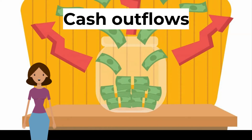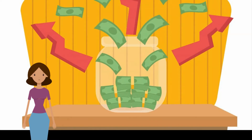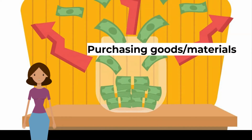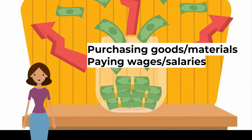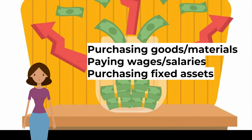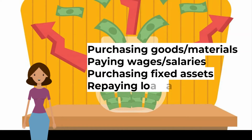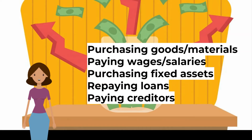Cash outflows are the sums of money paid out by the business over a period of time — for example, purchasing goods and materials for cash, paying wages, salaries and other expenses in cash, purchasing fixed assets, repaying loans, and paying creditors. Creditors are suppliers who supplied items to the business but were not paid at the time of supply.